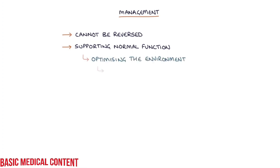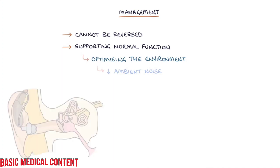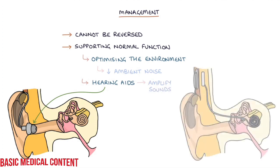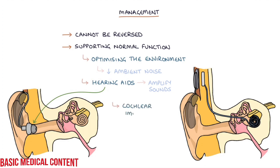Finally, let's talk about management. The effects of presbycusis cannot be reversed. Management involves supporting the person to maintain normal functioning, and this involves optimizing the environment, for example reducing the ambient noise during conversations to make it easier to hear what's being said, the use of hearing aids to amplify sounds and improve hearing, and a final option is cochlear implants in patients where hearing aids are not sufficient.